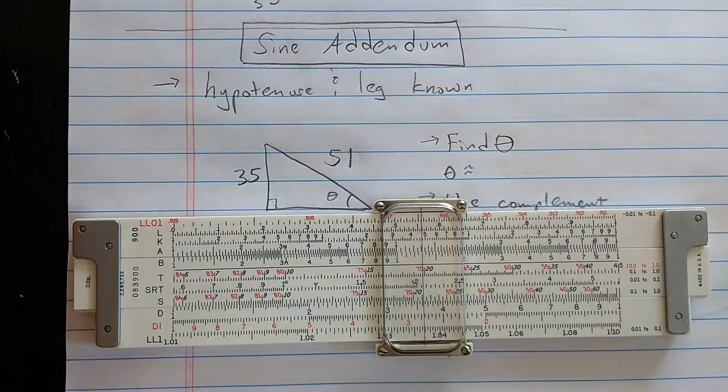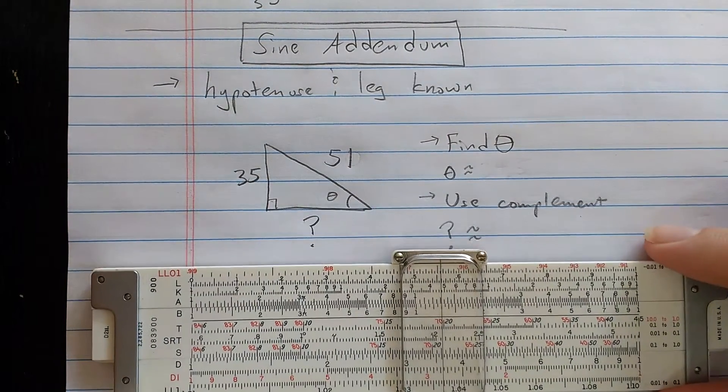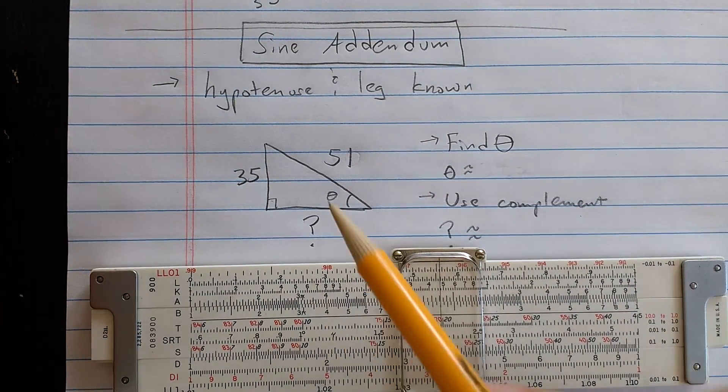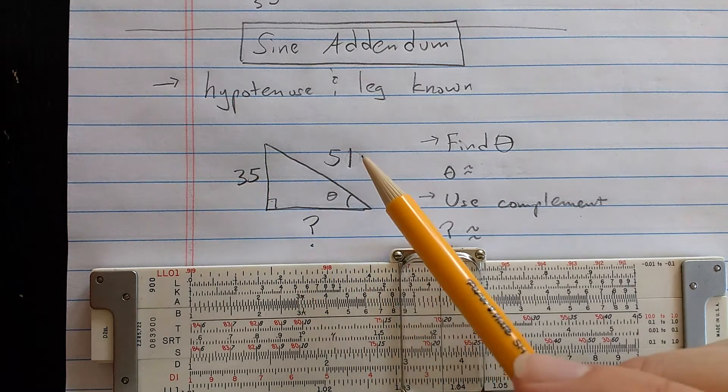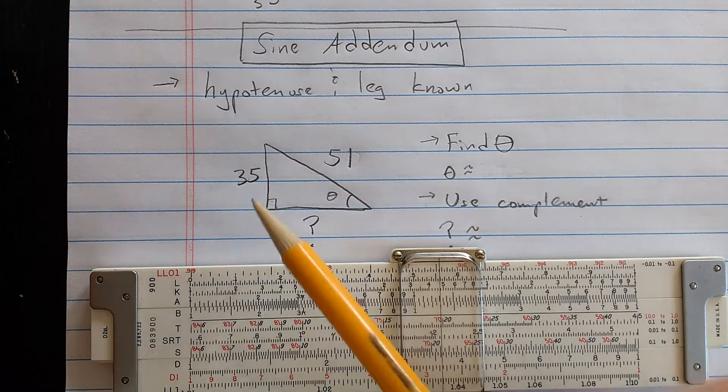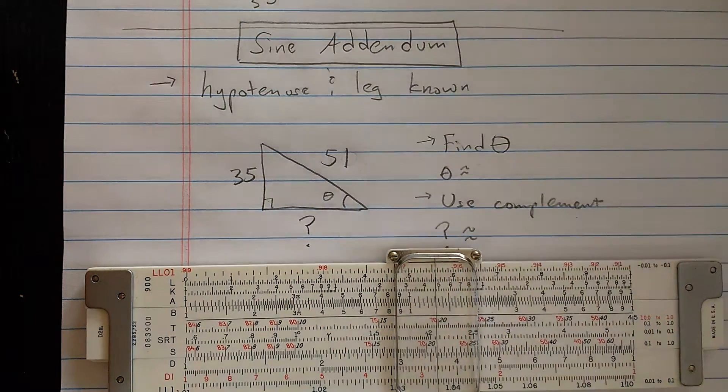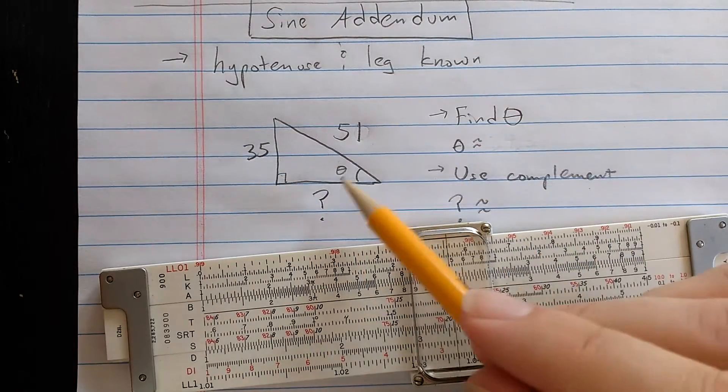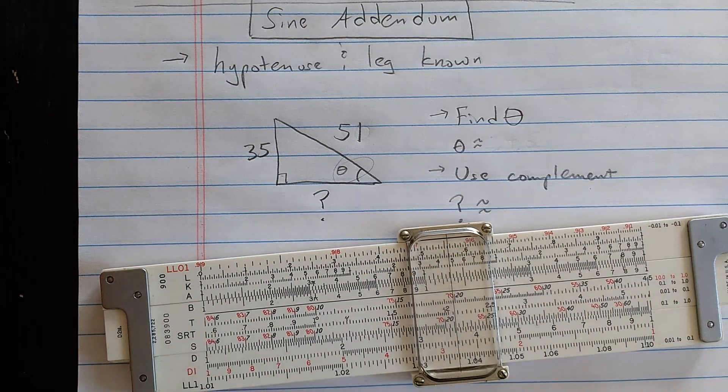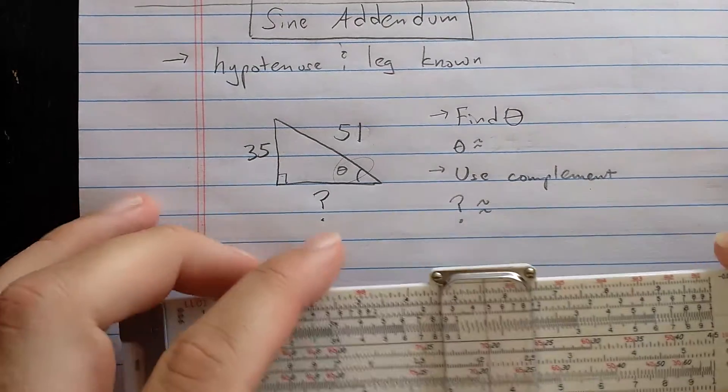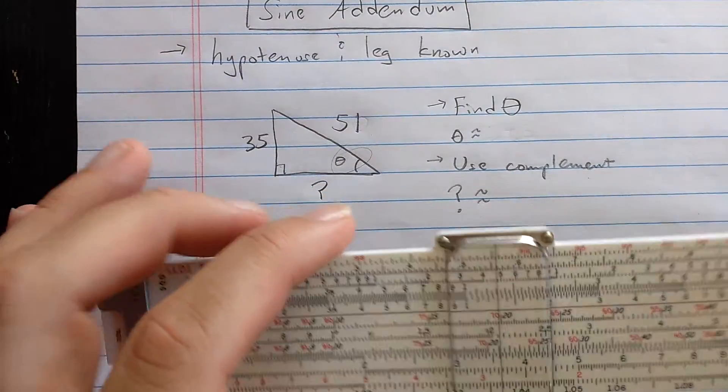Let's make a little addendum to what we said about sine. We never solved a triangle like this, where we had a right triangle, a hypotenuse known, and one of the other sides known. I'll pick this angle here, which is opposite one of the known sides, and set this up for the law of sines.